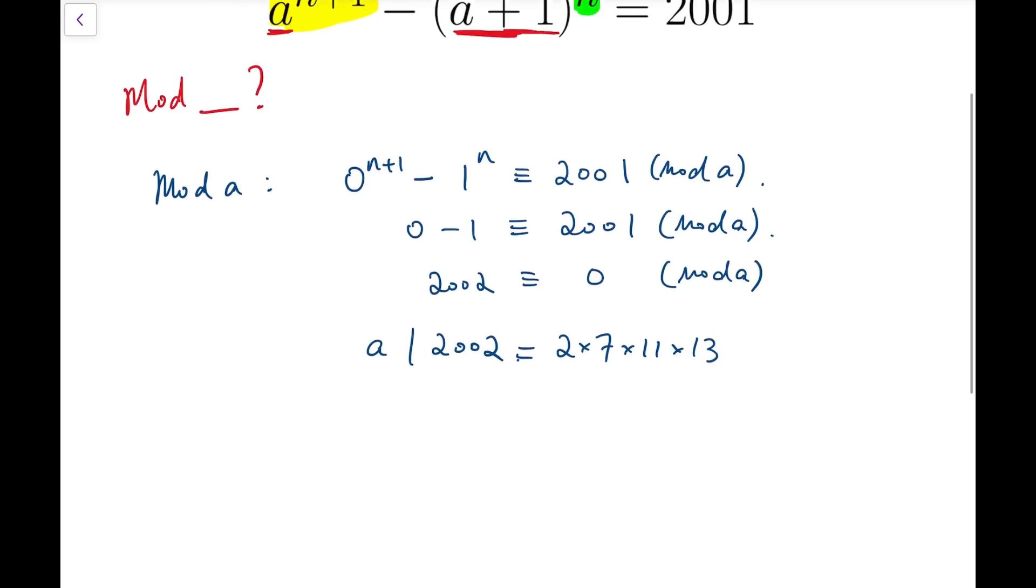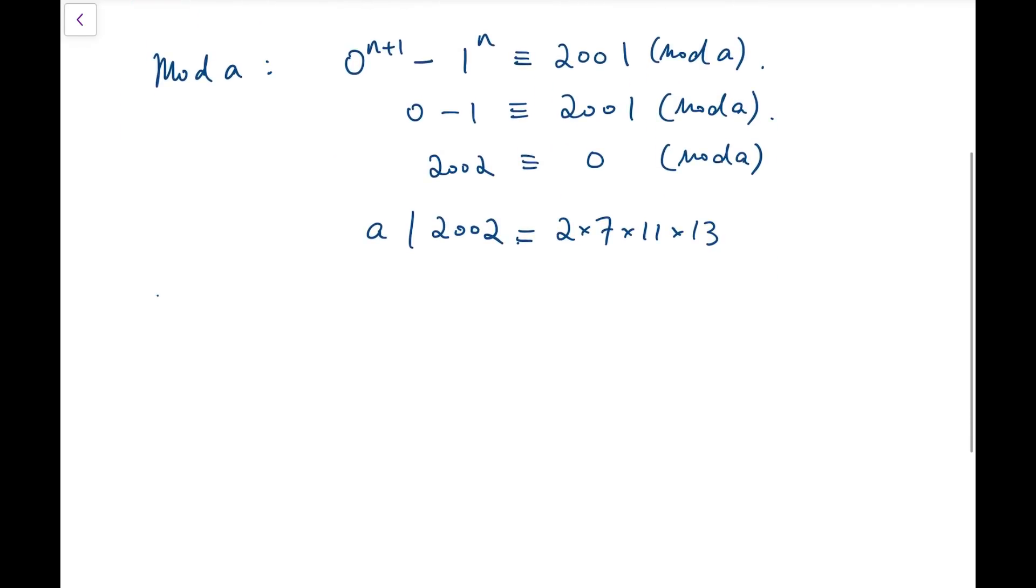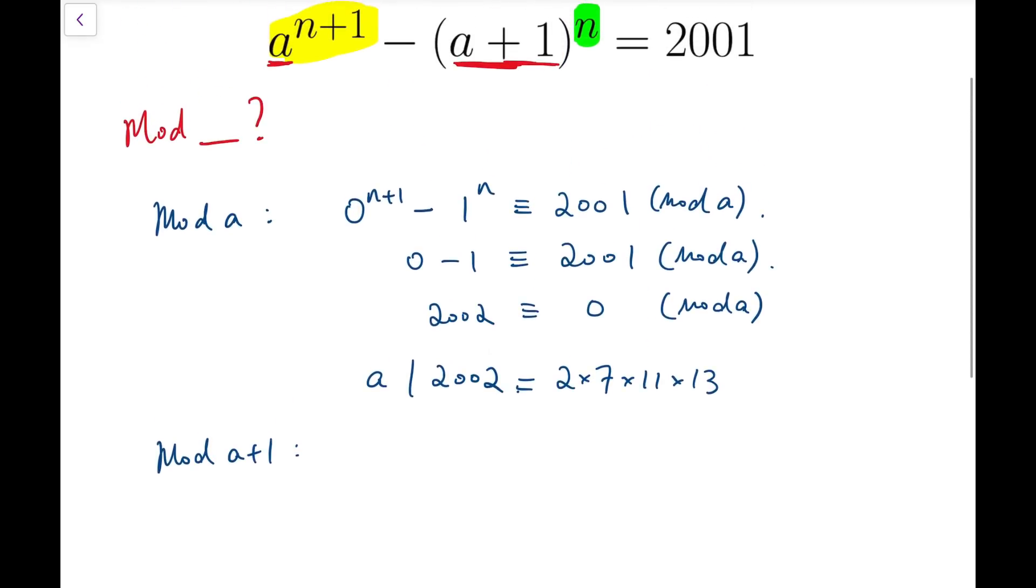To obtain more information, we can try mod a plus 1 as well. Now looking at the equation, we can see that for a, it will become minus 1, all to the power n plus 1, and then minus 0 is congruent to 2001. Again, there's nothing we can do at that side because we do not know the value of a.